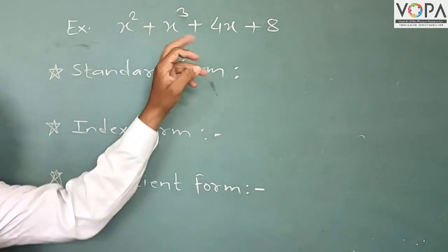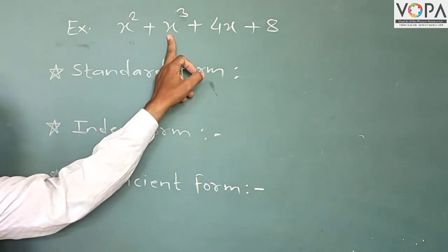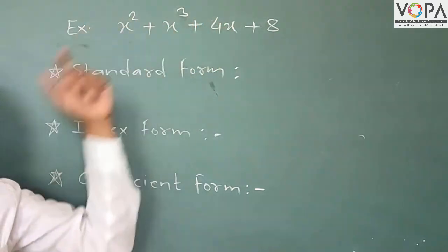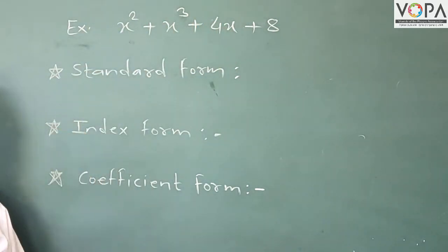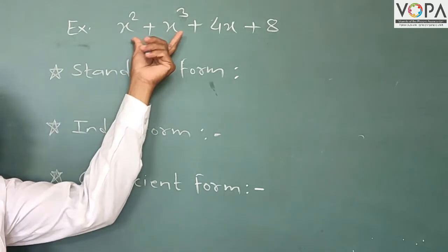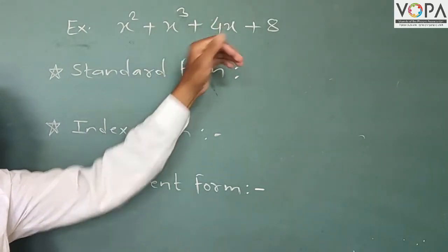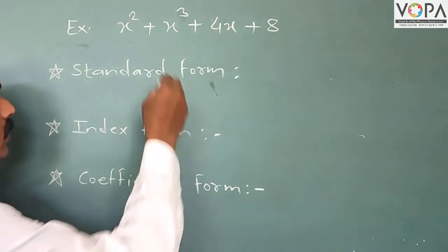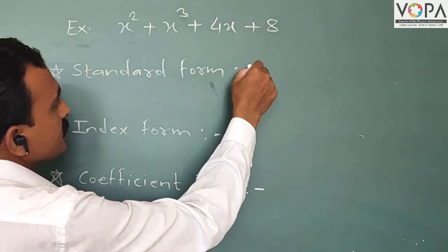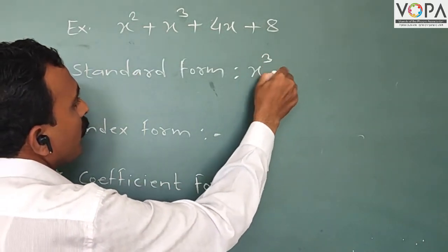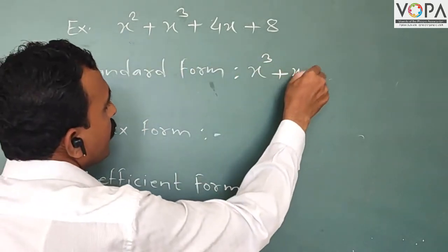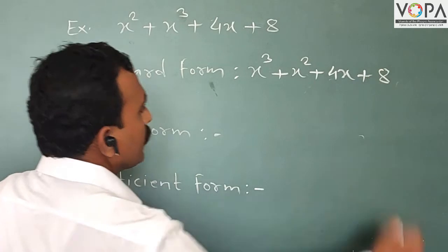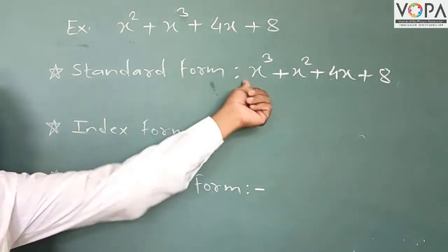Here is an example polynomial: x³ plus x² plus 4x plus 8. The indices of the given polynomial are not in descending order. If the indices are arranged in descending order, then it is called the standard form of that polynomial. Rearranging: the biggest index is 3, so we write x³, then x², then 4x, then plus 8. It is now in standard form.